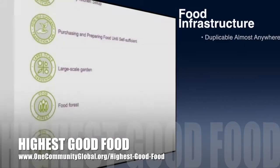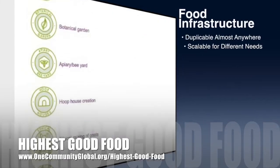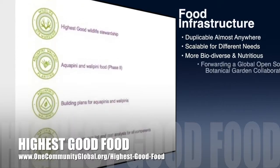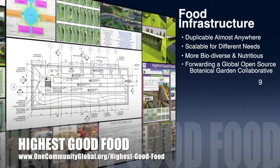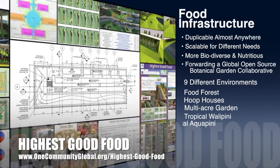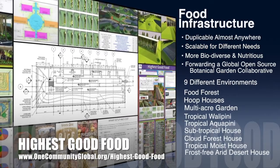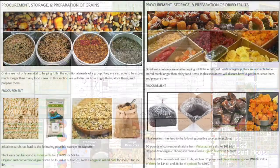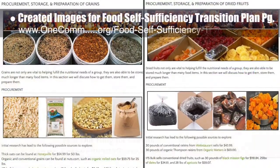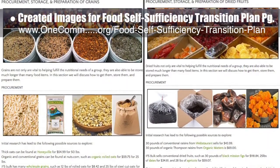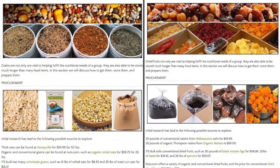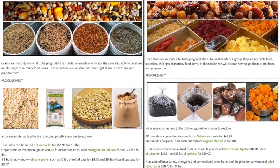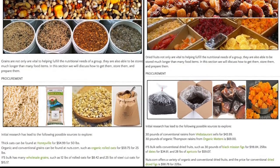OneCommunity's approach to highest good food is duplicable almost anywhere, scalable for different needs, more biodiverse and nutritious, part of forwarding a global open source botanical garden collaborative, and includes nine different free shared and duplicable growing environments. This week the core team created two new sections under bulk goods on the food self-sufficiency transition plan page — one section for grains and one for dried fruits — and added images and procurement details.